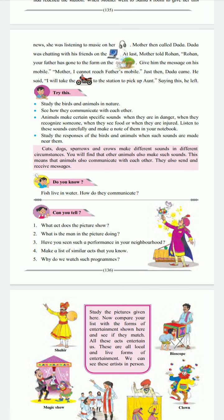Try this. Study the birds and animals in nature. See how they communicate with each other. Animals make certain specific sounds when they are in danger, when they recognize something, when they see food, or when they are injured. Listen to these sounds carefully and make a note of them in your notebook. Study the responses of the birds and animals when such sounds are made near them. Cats, dogs, sparrows, and crows make different sounds in different circumstances. This means that animals also communicate with each other — they also send and receive messages.